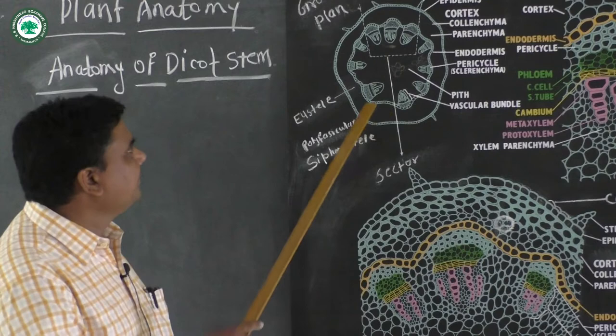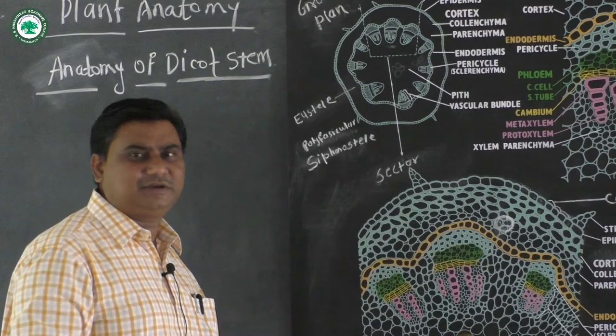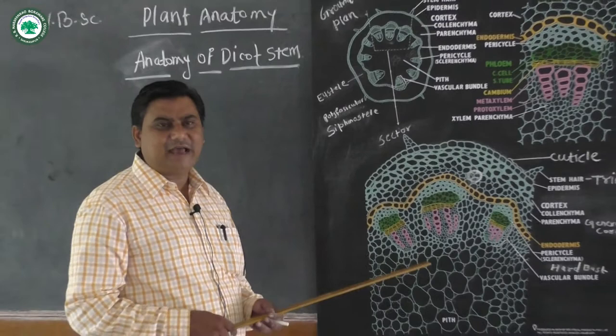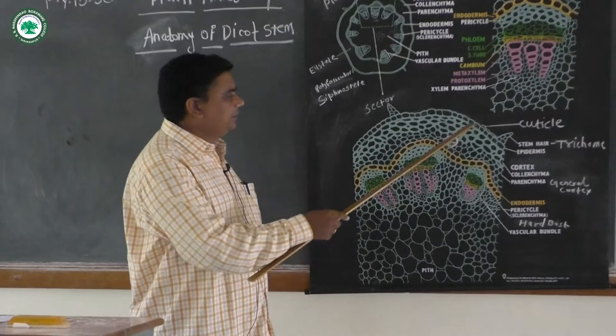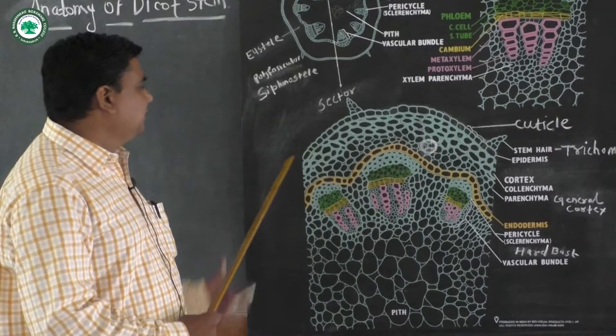This one is a sector of the particular stem, and we see this particular sector magnified in the next figure. This one is the transverse section of the particular dicot stem. Here we are going to take the example of the Helianthus annus stem. It shows three distinct regions: epidermis, general cortex or cortical region, endodermis and the vascular bundle, and in the center there is the pith.